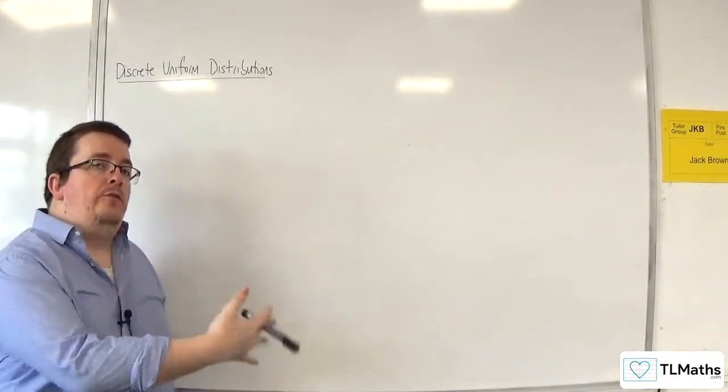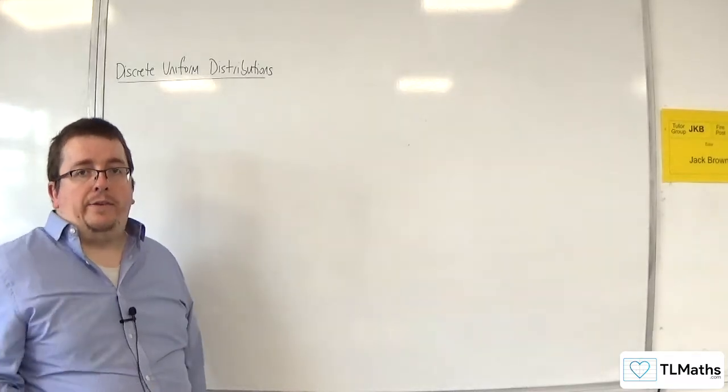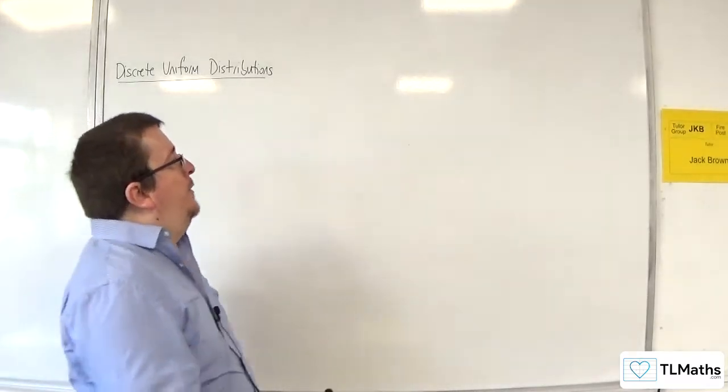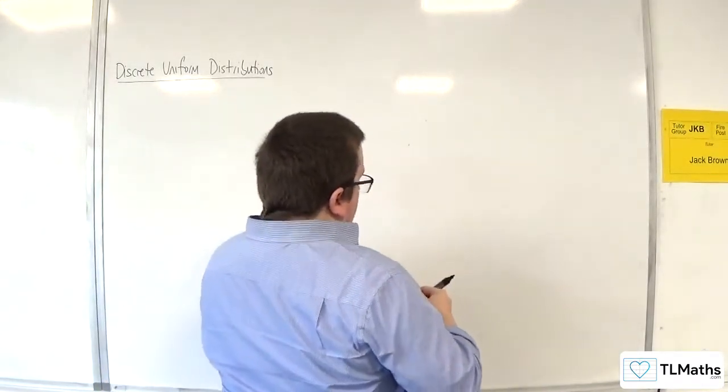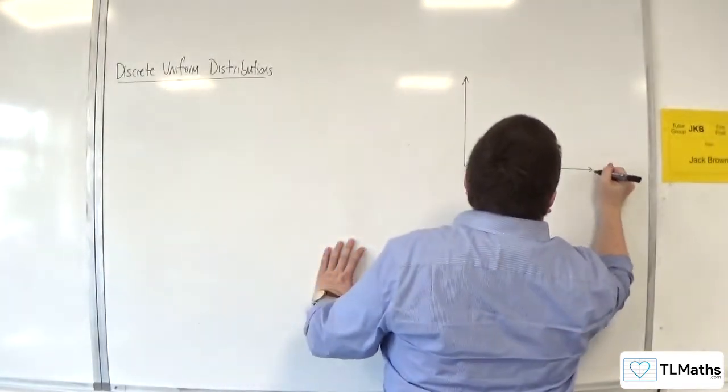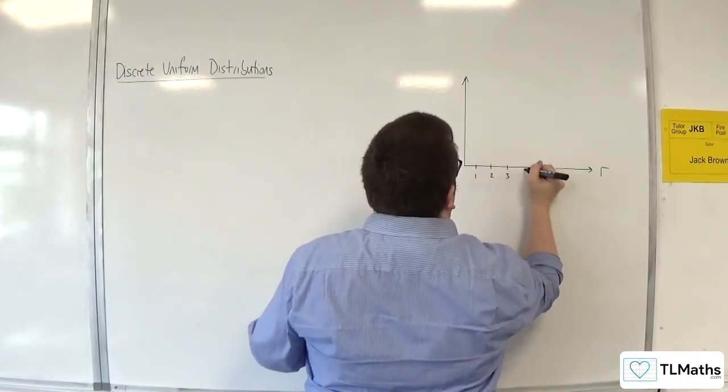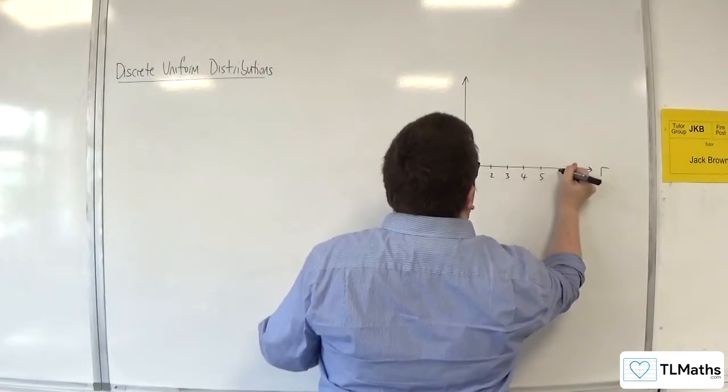You've got 1, 2, 3, 4, 5, 6. The probability of each one of those coming up is 1 over 6. So if you were to draw the distribution, if we had our values of r along here, so we've got 1, 2, 3, 4, 5, and 6.